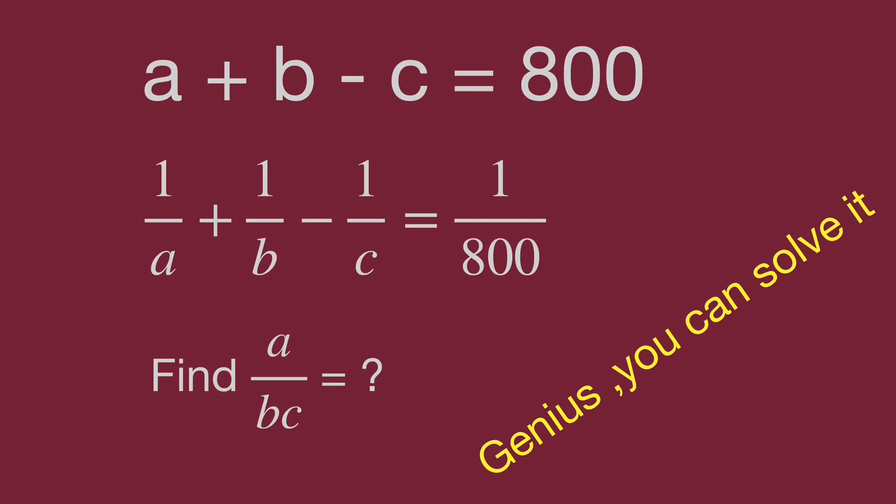We have the equations: a plus b minus c equal to 800, and 1 over a plus 1 over b minus 1 over c equal to 1 over 800. Find the value of a over bc.